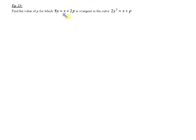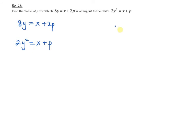Now I move on to example 23. Find the value of p for which 8y equals x plus 2p. When you have 8y equals x plus 2p, you know this is a straight line because it only contains the terms x and y. This straight line is a tangent to the curve 2y squared equals x plus p. Since it is a tangent to the curve, you know that b squared minus 4ac equals 0.